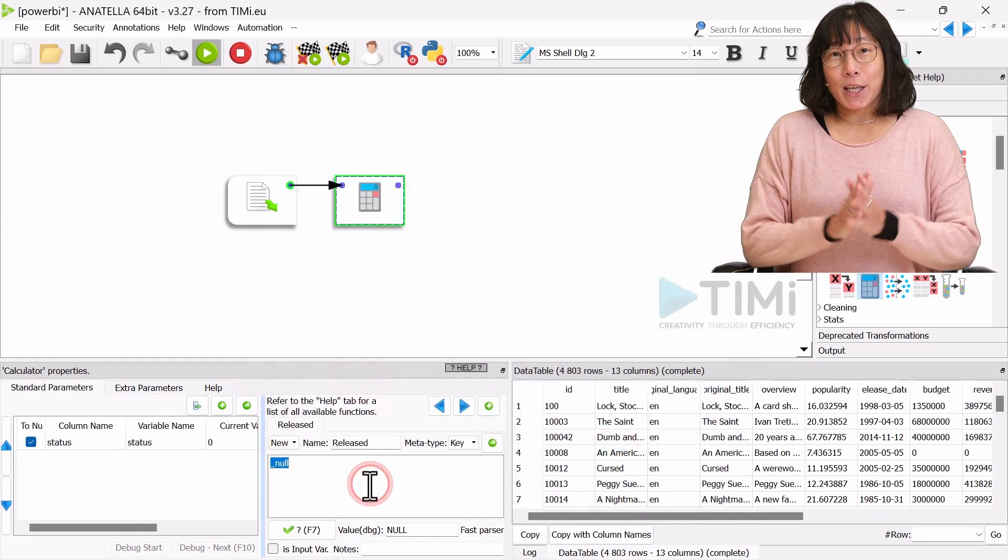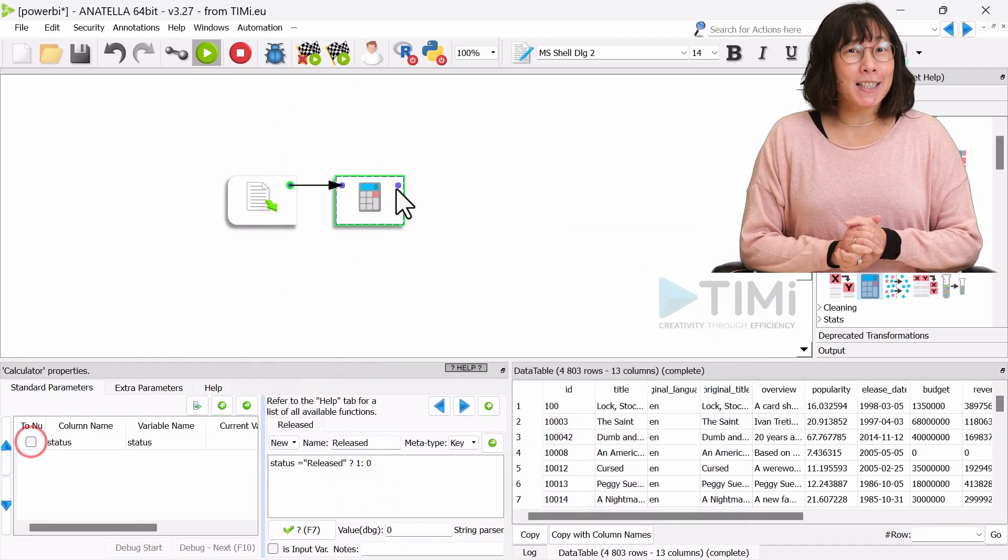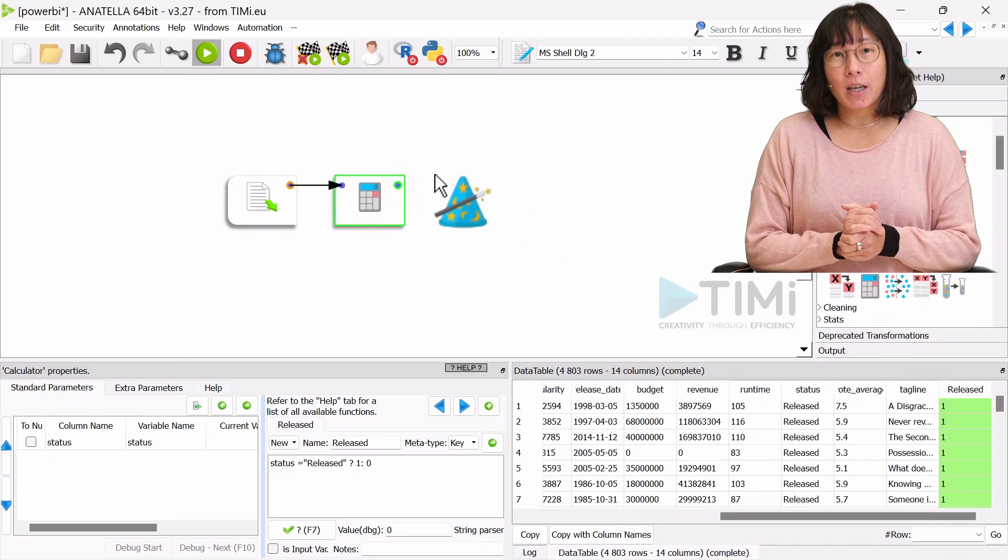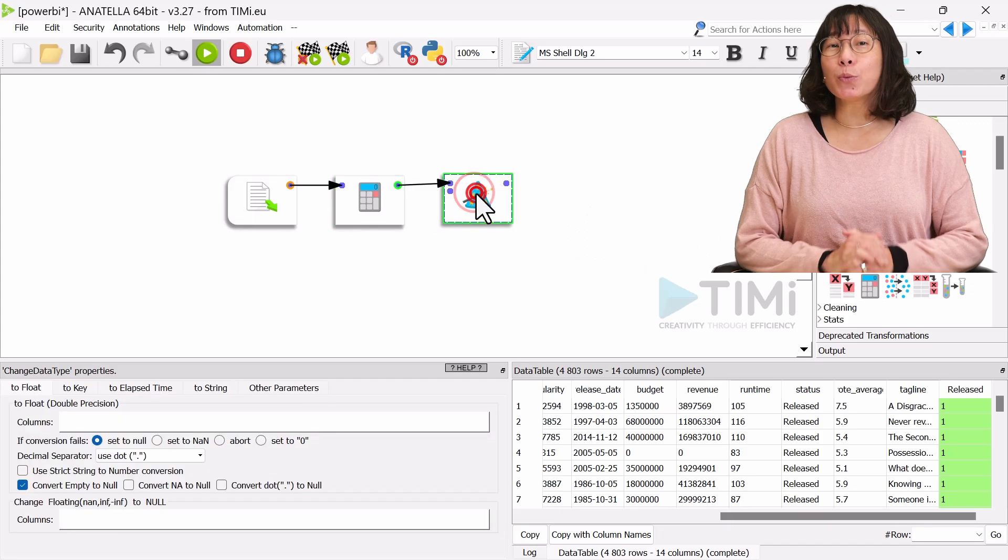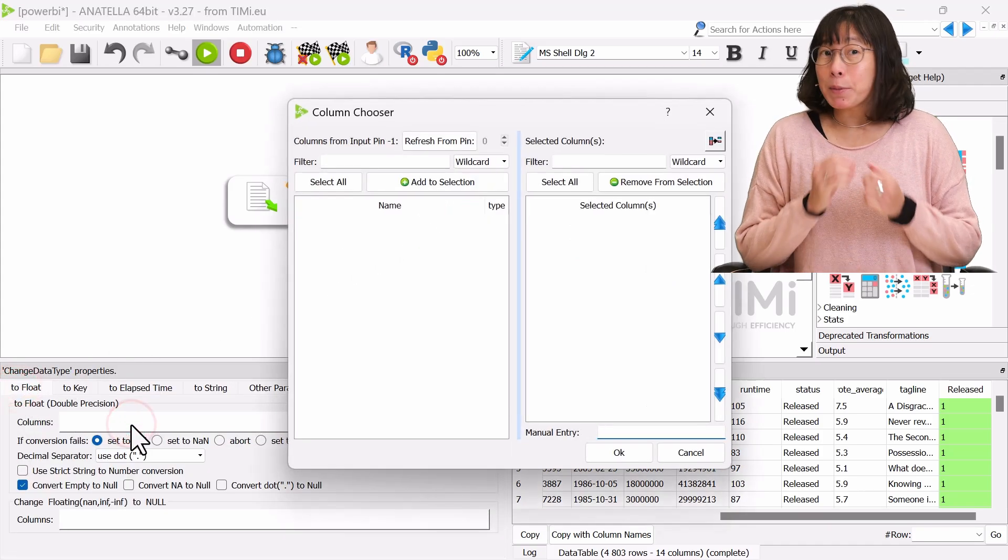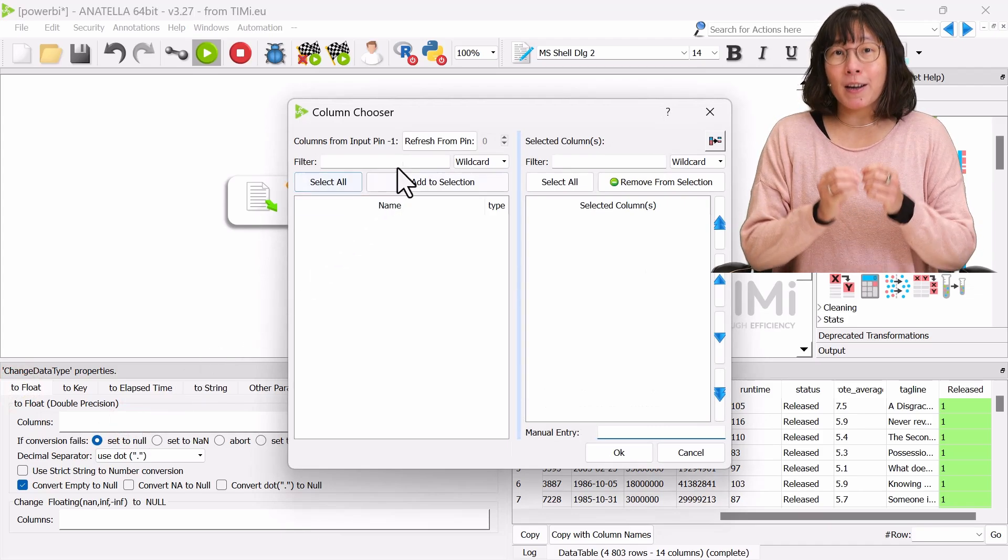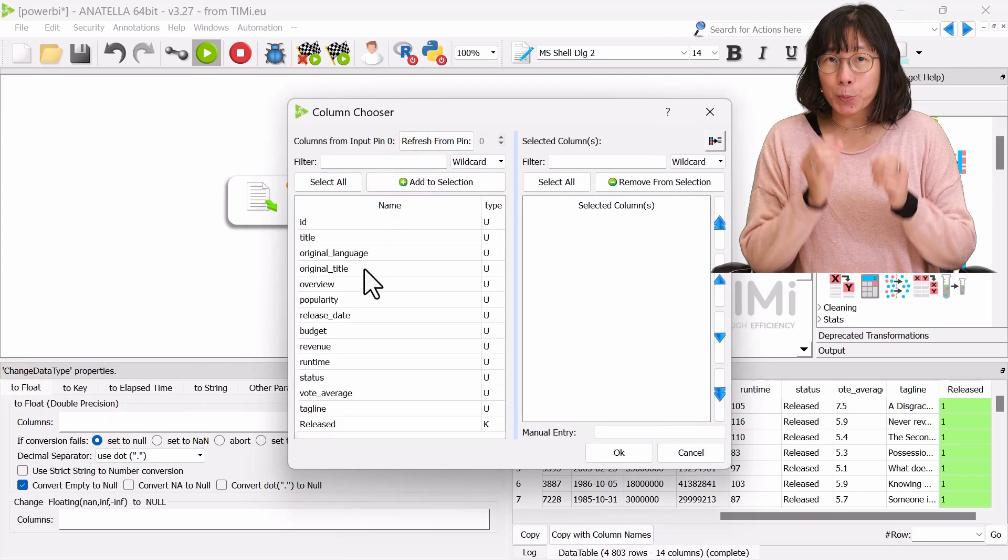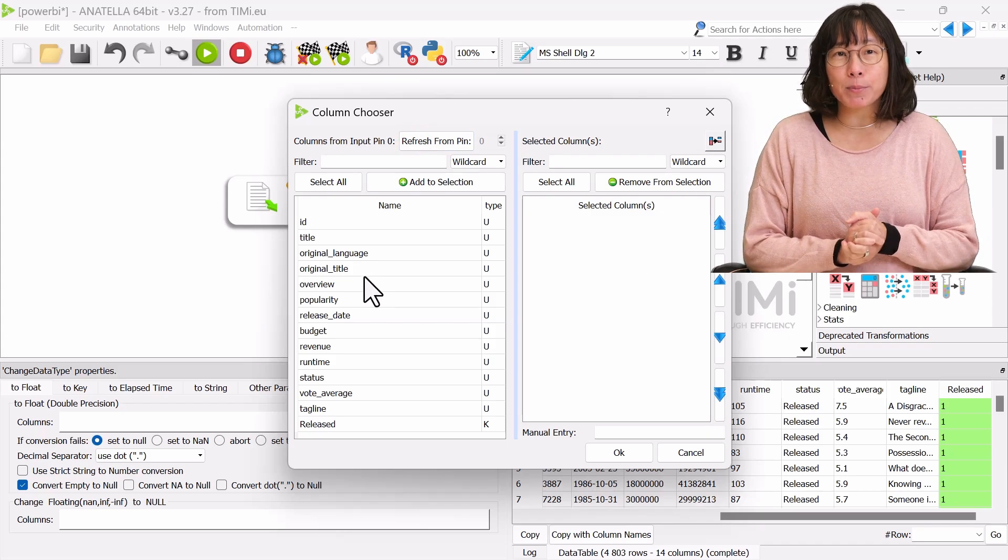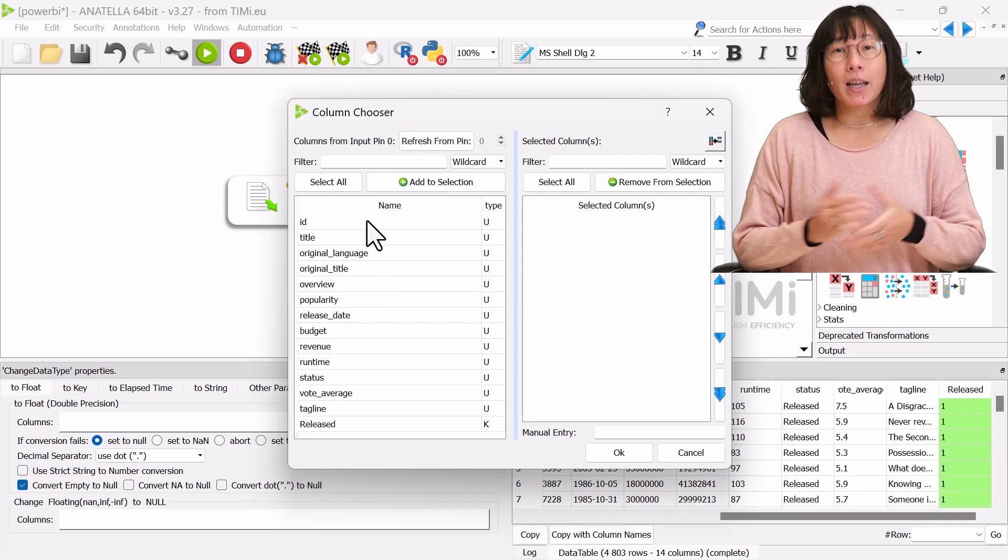The next step involves using Anatella's change data type box to convert certain column data types to numbers, ensuring compatibility with Power BI's calculation capabilities. This step is crucial because Power BI requires columns to be in a floating point format to perform sums or averages, unlike Anatella.